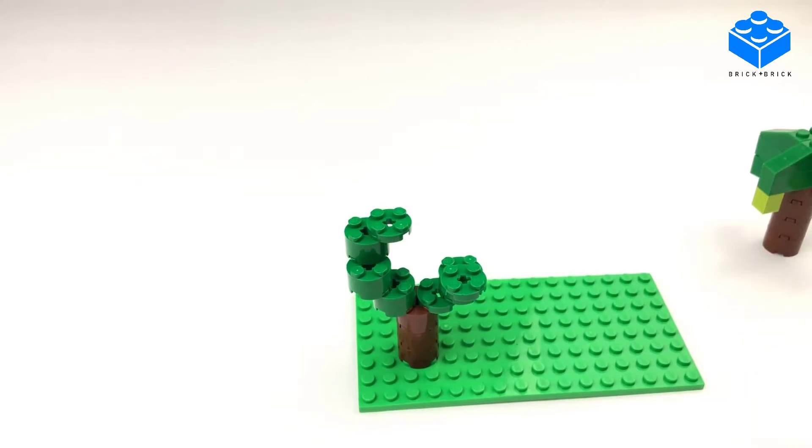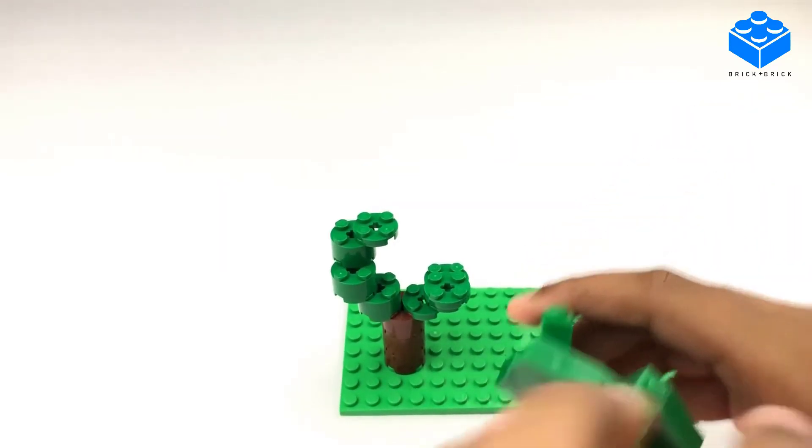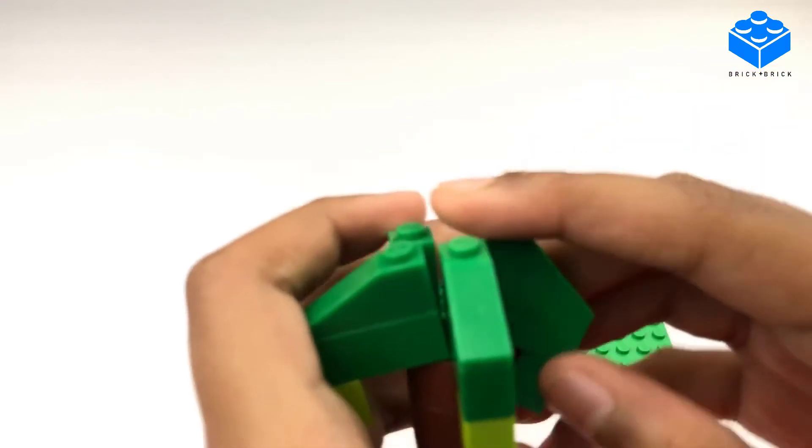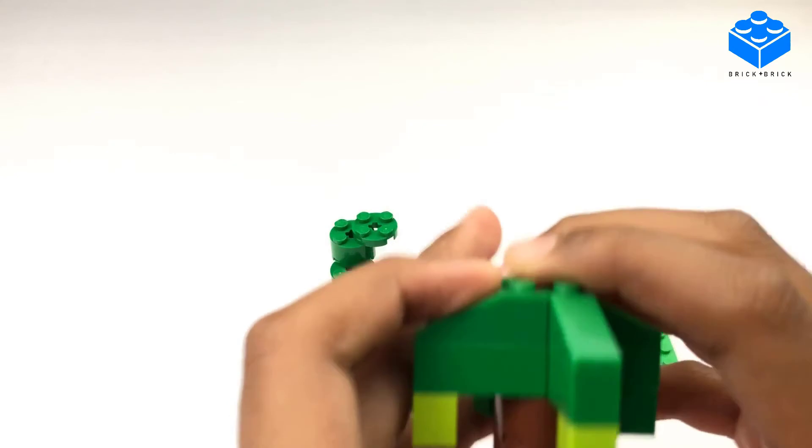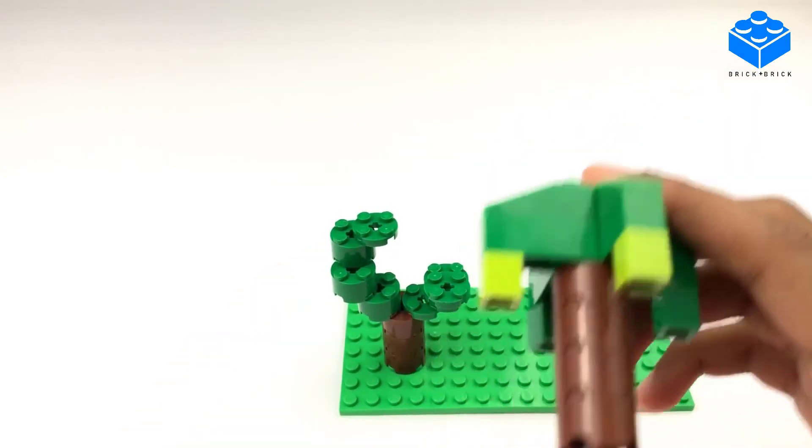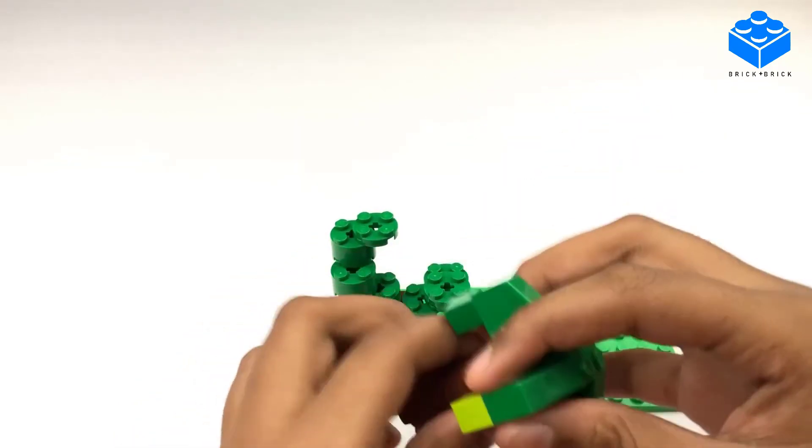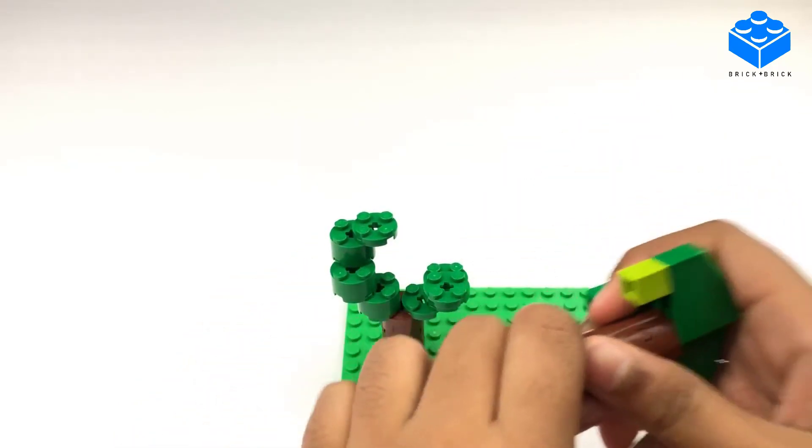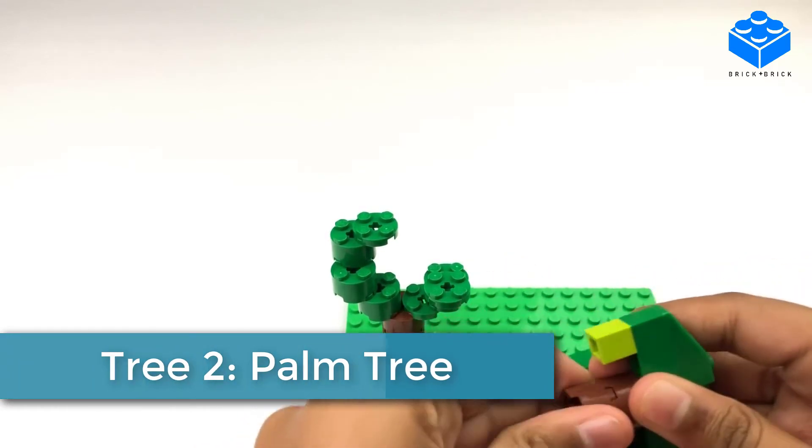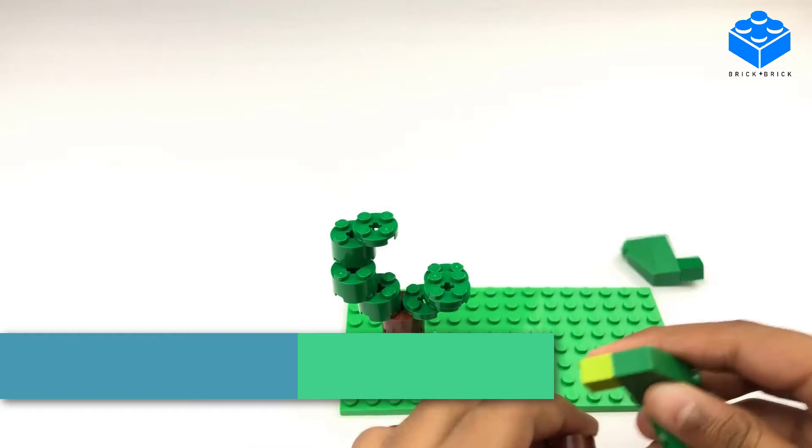The second tree I'm gonna show you is this palm tree. Now be careful if you want to build this. This may break easily so place a jumper on top. I haven't done so for the ease of building this. So I'm gonna take it apart so I can show you how to build this.